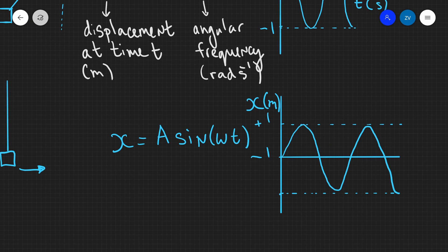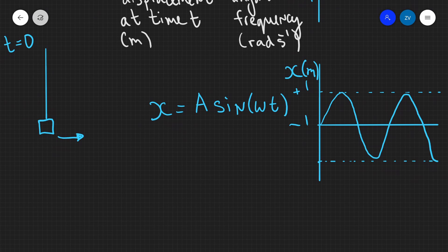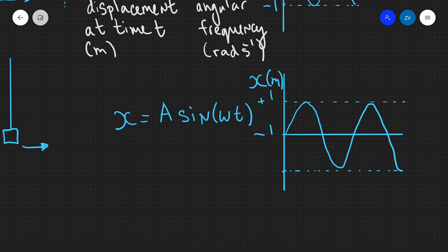We can see that we're going to use that because sine of zero is zero, which means that our displacement from the equilibrium point will be zero when the motion begins.